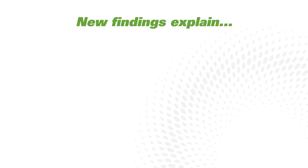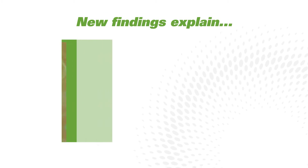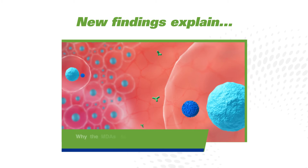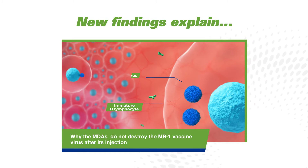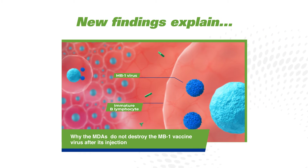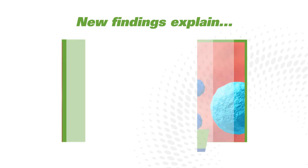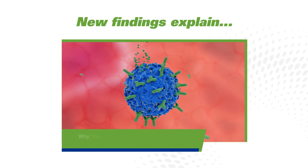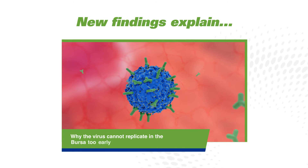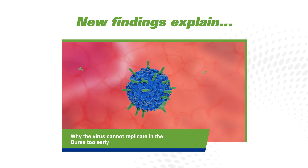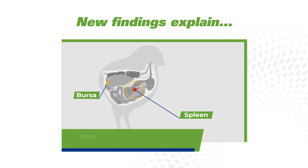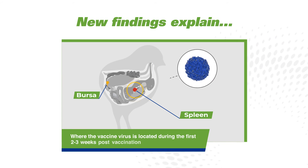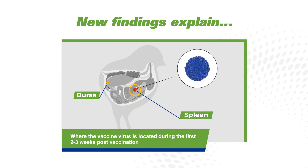These new findings explain why the MDAs do not destroy the MB1 vaccine virus after its injection, why the virus cannot replicate in the bursa too early, and where the vaccine virus is located during the first two to three weeks post vaccination.